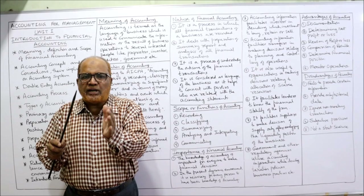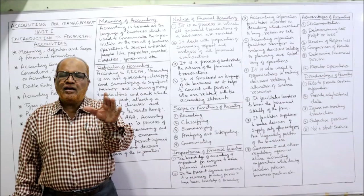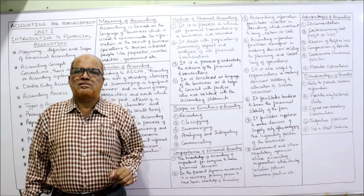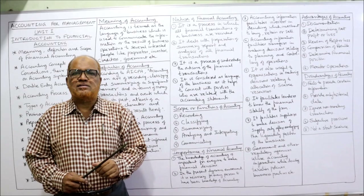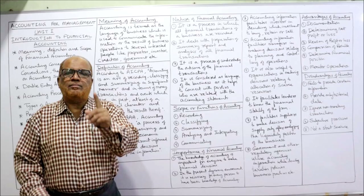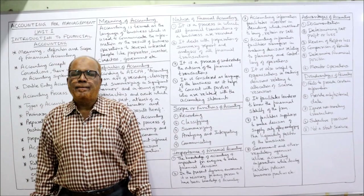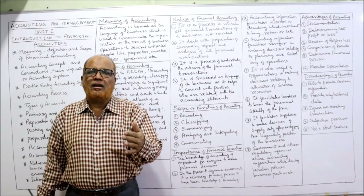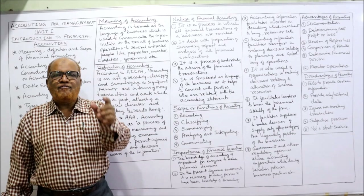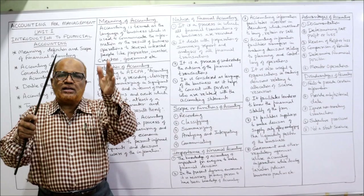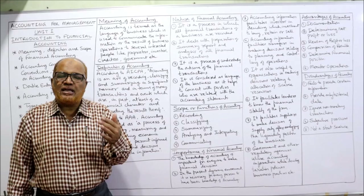For example, salaries are paid twelve times a year — put all salary payments at one place, all sales at one place, all purchases at one place. This is classifying. The third step is summarizing — at the end of the year we find the totals of every account and put all totals in a statement called the trial balance to check arithmetical accuracy.